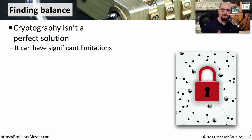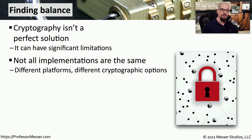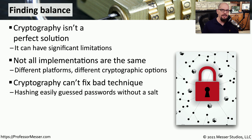Although cryptography provides us with a number of very powerful capabilities, there are still limitations in how we use cryptography. If you examine the way cryptography has been implemented in one application and compare it to a different application, you'll probably see a very big difference. Those differences allow us to customize how different applications use cryptography, but we need to understand how that cryptography was originally implemented. It's the implementation of cryptography that is often its biggest weakness.